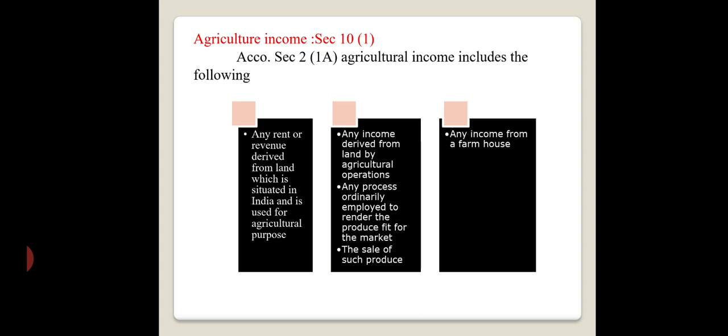The second item of agricultural income is any income derived from land by agricultural operations. If you are doing agricultural activities and generating any income from that land, that is agricultural income. Any process ordinarily employed to render the produce fit for the market — whatever goods you are producing that are fit for market — and the sale of such saleable produce are also agricultural income. Any income from a farmhouse is also treated as agricultural income.